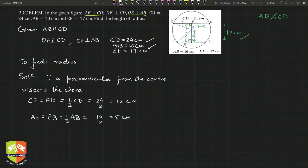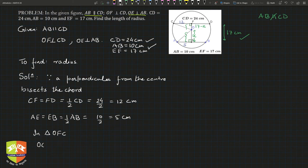We can apply Pythagoras' theorem. In triangle OFC: OC² = OF² + FC²  — call this equation (1).